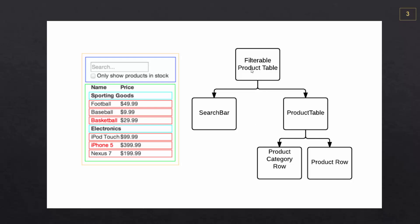So we have the filterable product table — that would be the entire thing, kind of like a wrapper component. Then we have the search bar which is outlined in blue, the product table which is outlined in green, the product category row which is in blue, and then the product rows which are in red. So you can see we have multiple instances of the same component.